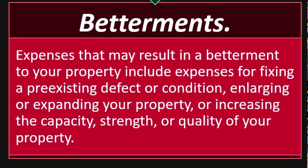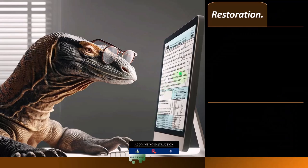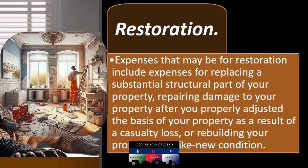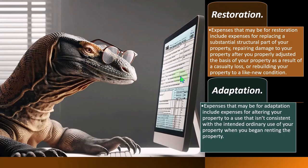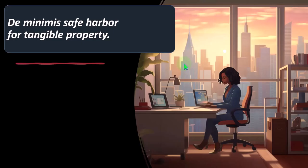An expense is for an improvement if it results in a betterment, restoration, or adaptation of your property to a new or different use. Betterments include fixing a pre-existing defect, enlarging or expanding your property, or increasing the capacity, strength, or quality of your property. Restorations include replacing a substantial structural part, repairing casualty damage, or rebuilding to like-new condition. Adaptations include altering your property to a use that isn't consistent with the intended ordinary use when you began renting it.